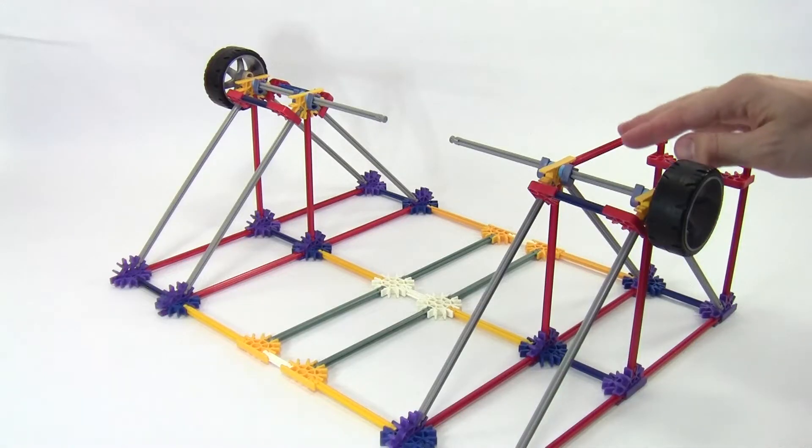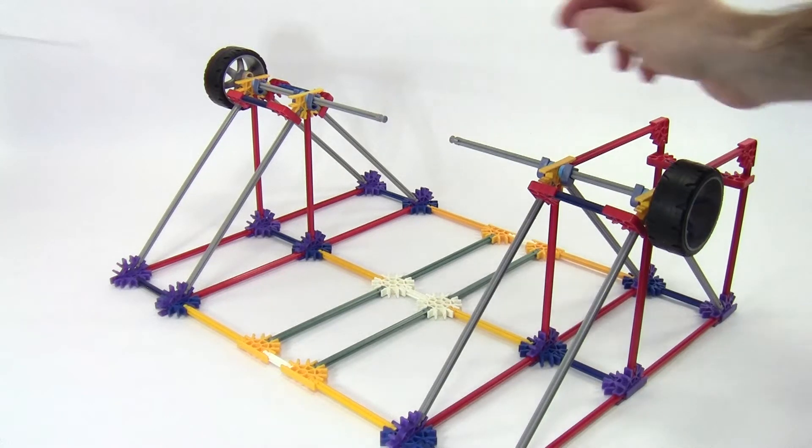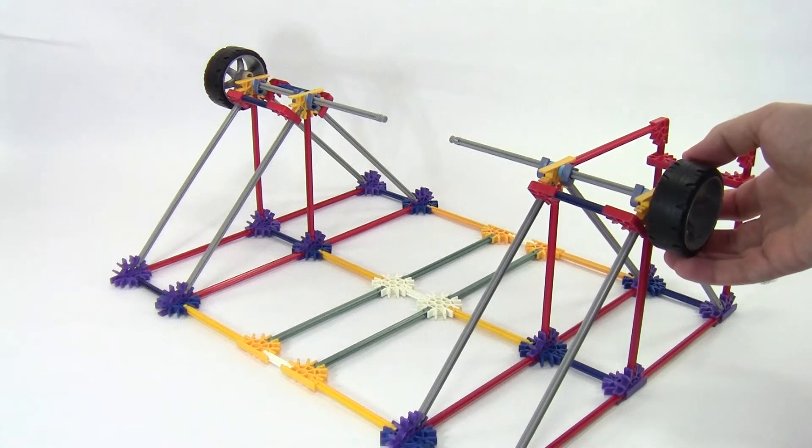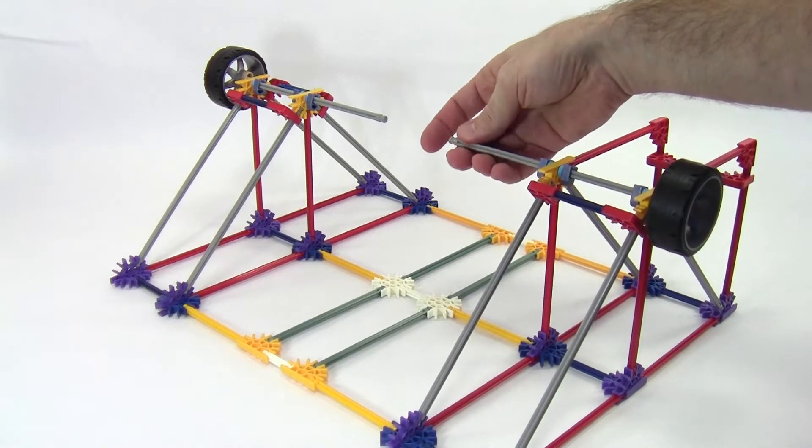Start by building two adjacent supports for two separate axles. The axles should be aligned but not connected. Place a wheel on the end of each axle. The wheel should be fixed to the axle such that it rotates along with the axle when you spin it.